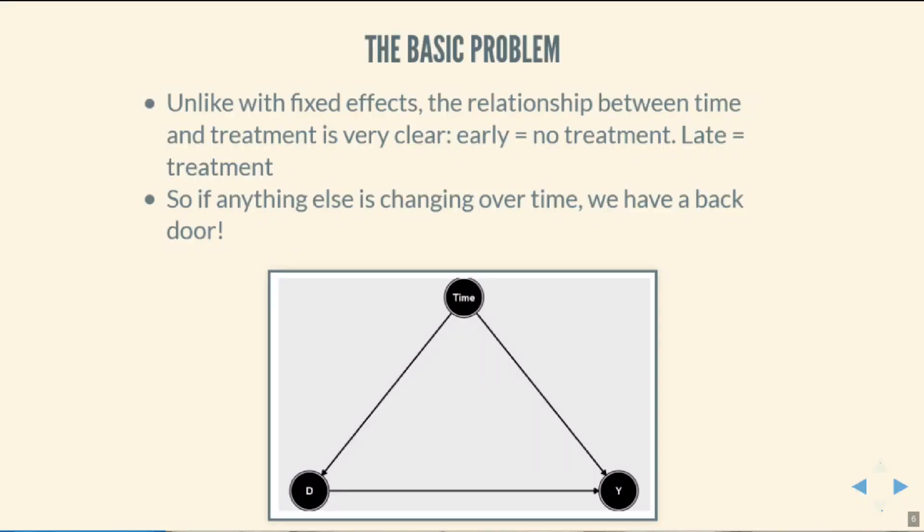The basic idea of difference in differences is that we are looking for the effect of a policy on a treated group, and we're going to adjust for some facts that might make it difficult to look at that effect — some back doors — by picking a control group that we can look at at the same time. We have some treatment, which we'll call D here. It's common in the treatment effects literature to call the treatment D instead of X.